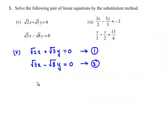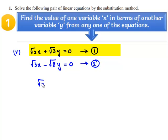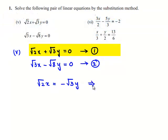So now the first equation can be written as root 2 x is equal to minus root 3 y. That implies x is equal to minus root 3 divided by root 2 times of y.